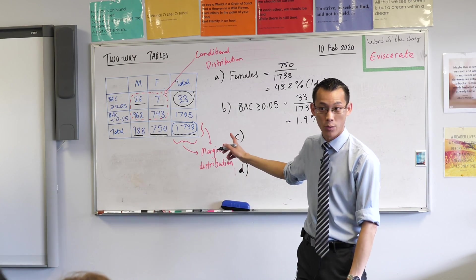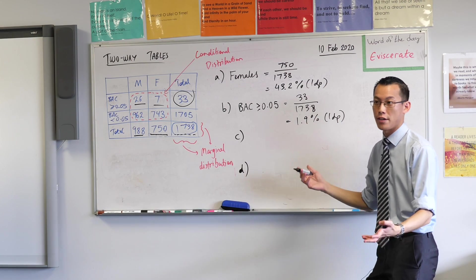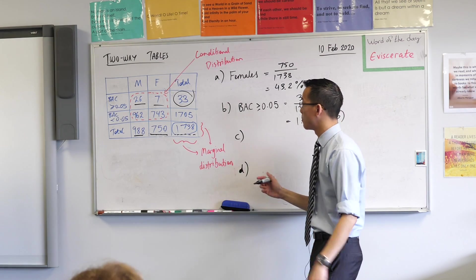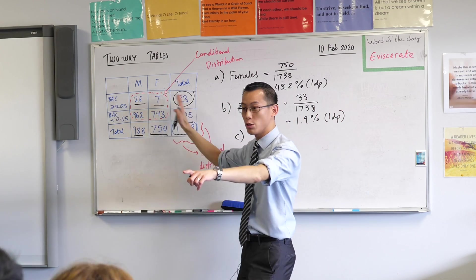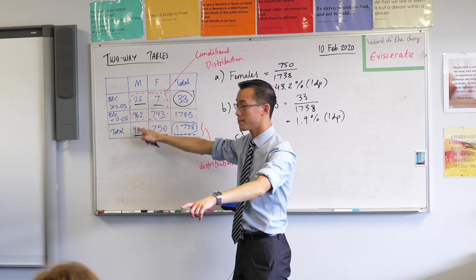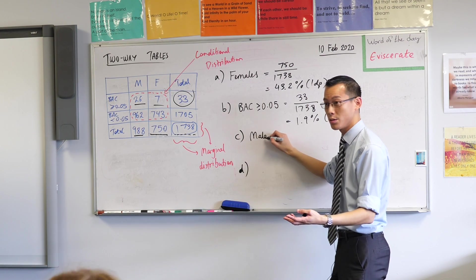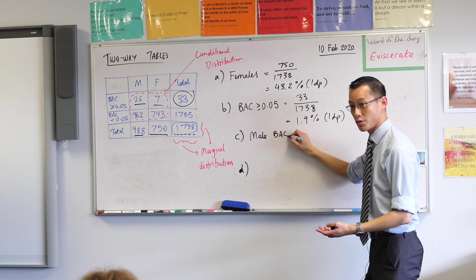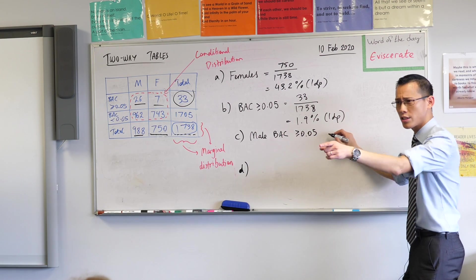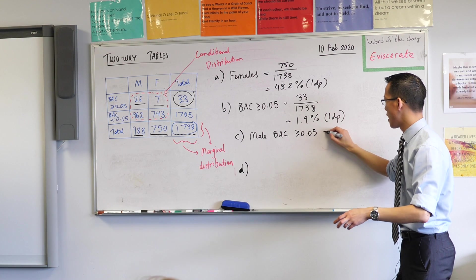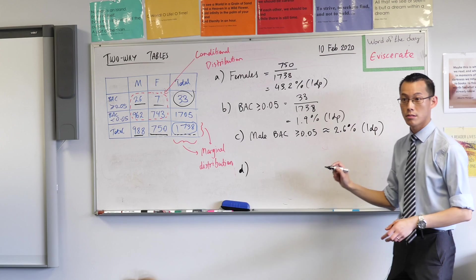Has anyone actually already worked these out? Max, which one did you work out? Male, 2.6%. Can we write this down? So what would we call this group? This is the male drivers with a blood alcohol concentration that was exceeding or equal to. So this was, what did we say? 2.6% to one decimal place.